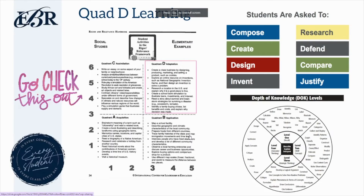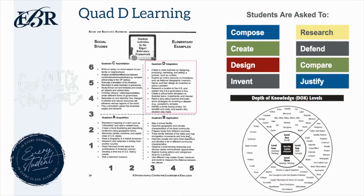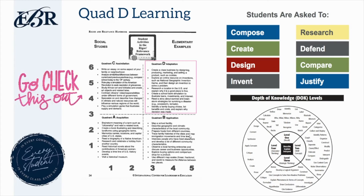Finally, we'll take a look at Quad D Learning. Quad D Learning is essential to center rotations in that it allows teachers to differentiate stations based on the abilities of their students. Quad D is our ultimate goal, but for students who are not there yet, they may transition beginning with A, moving on to B, C, and finally D. Through Quad D Learning, students are asked to compose, create, design, invent, research, defend, compare, and justify. All of these verbs align to the DOK levels. You may have students who are working at Level 1 and those working at Level 3, but Quad D makes it easy to pull different activities at different levels so you can differentiate activities for your students.